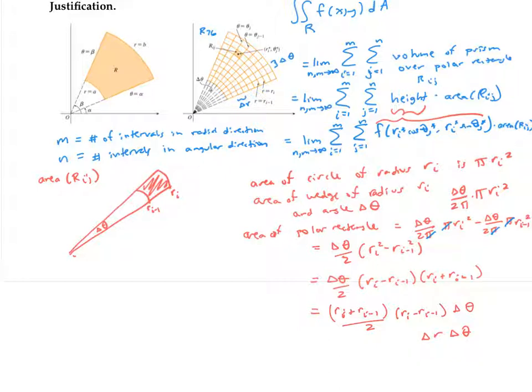Now notice that this quantity, this difference of radii, is just my Δr. And finally, this quantity here is the midpoint between r_i and r_(i-1). So I can think of this midpoint as my sample point r_i*.